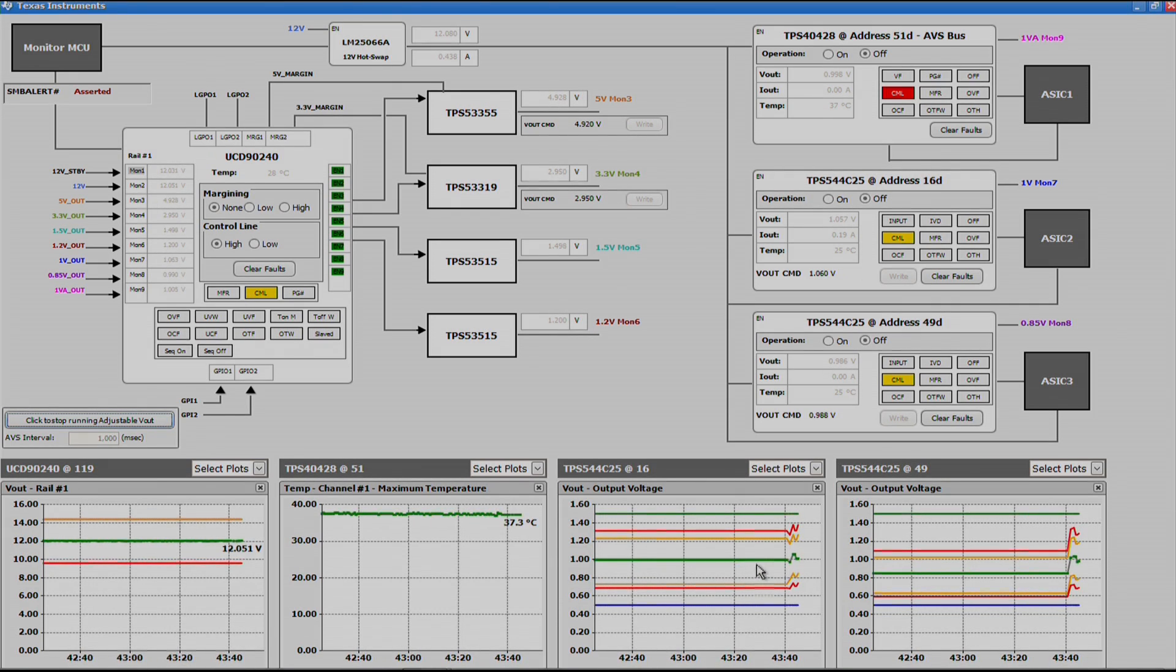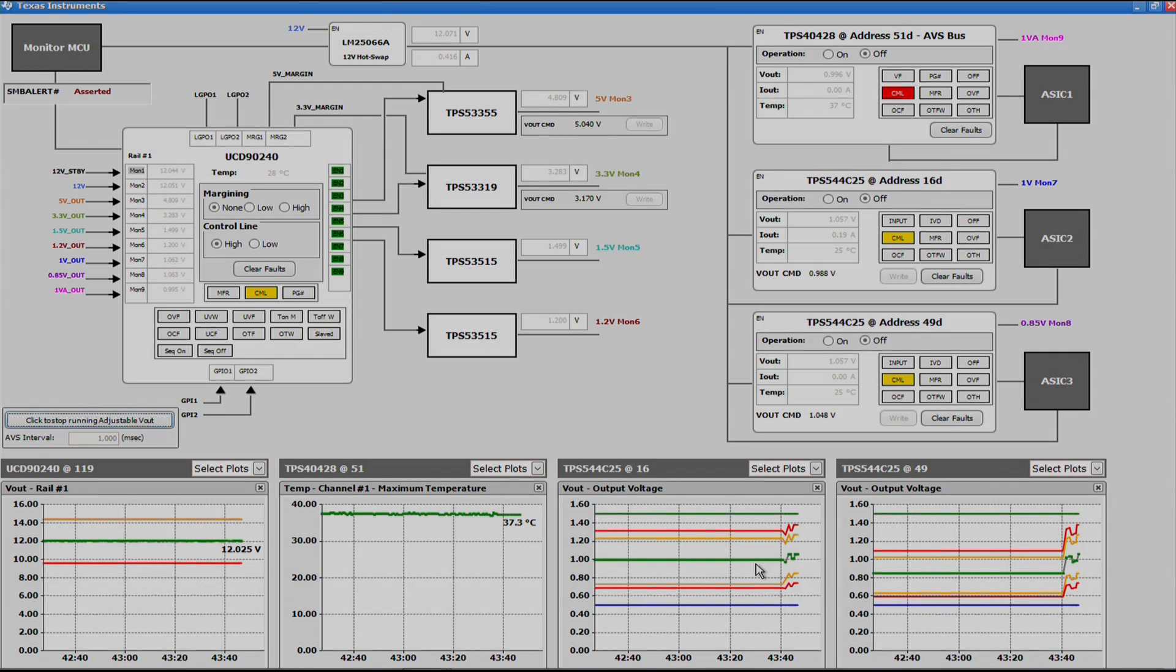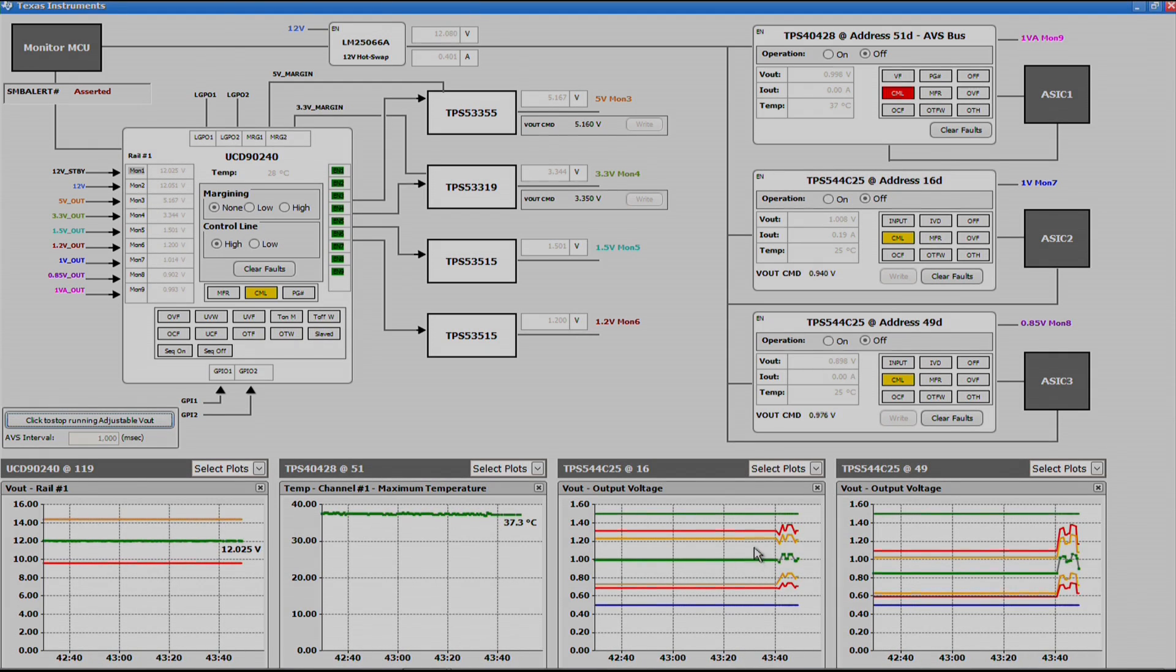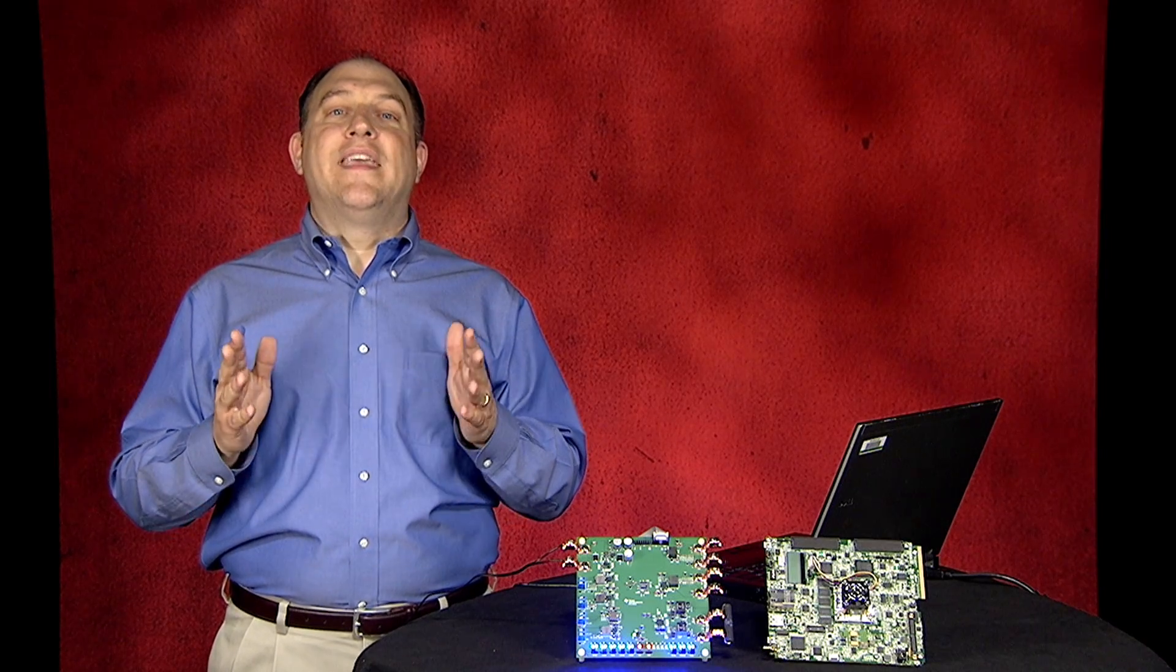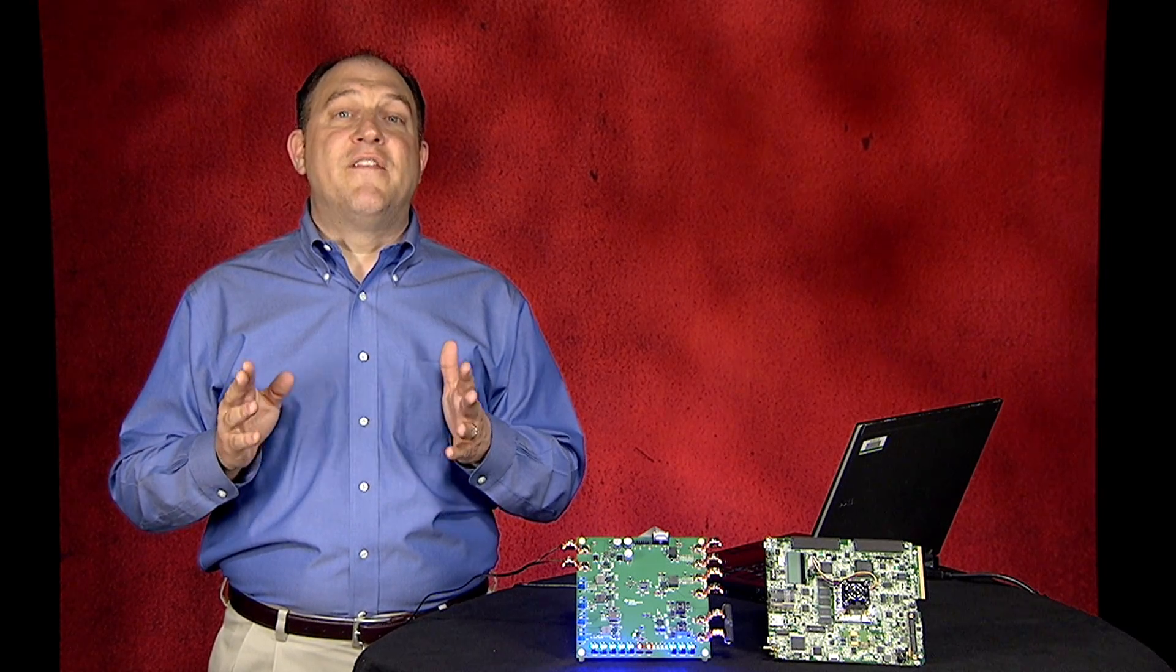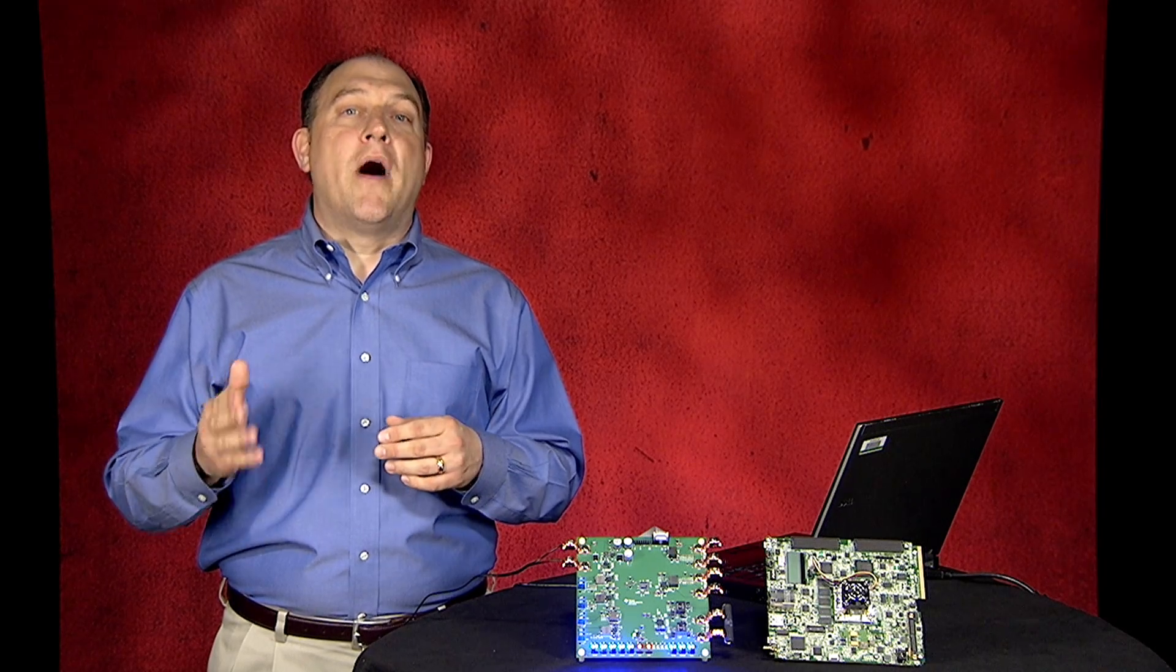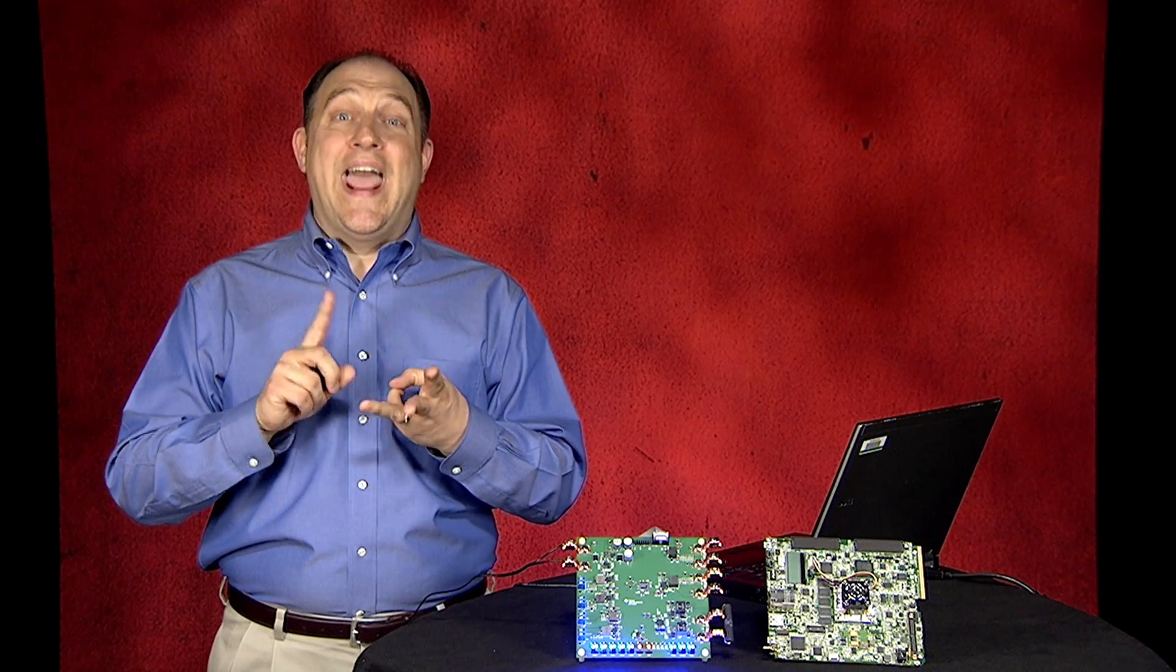The green line in the middle shows the output voltage changing every second. The yellow and red lines represent the voltage warning and fault levels. With the GUI, the output voltage can be adjusted via the VOUT command closed-loop while monitoring voltage, current, and temperature.